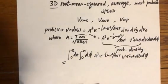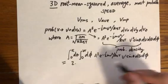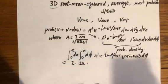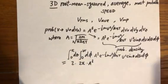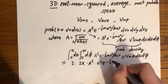In a different video we showed that the integral of sin theta d theta from zero to pi is simply two. The integral of d phi from zero to two pi is simply two pi. And then we have A to the power of three and V squared times the Gaussian function.